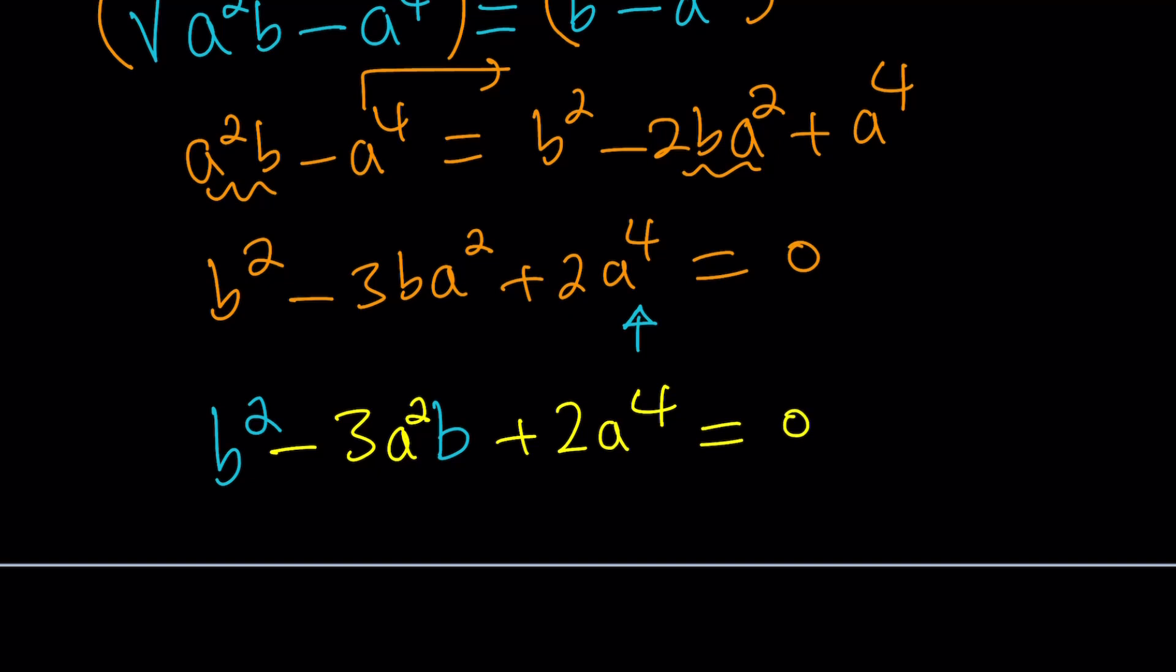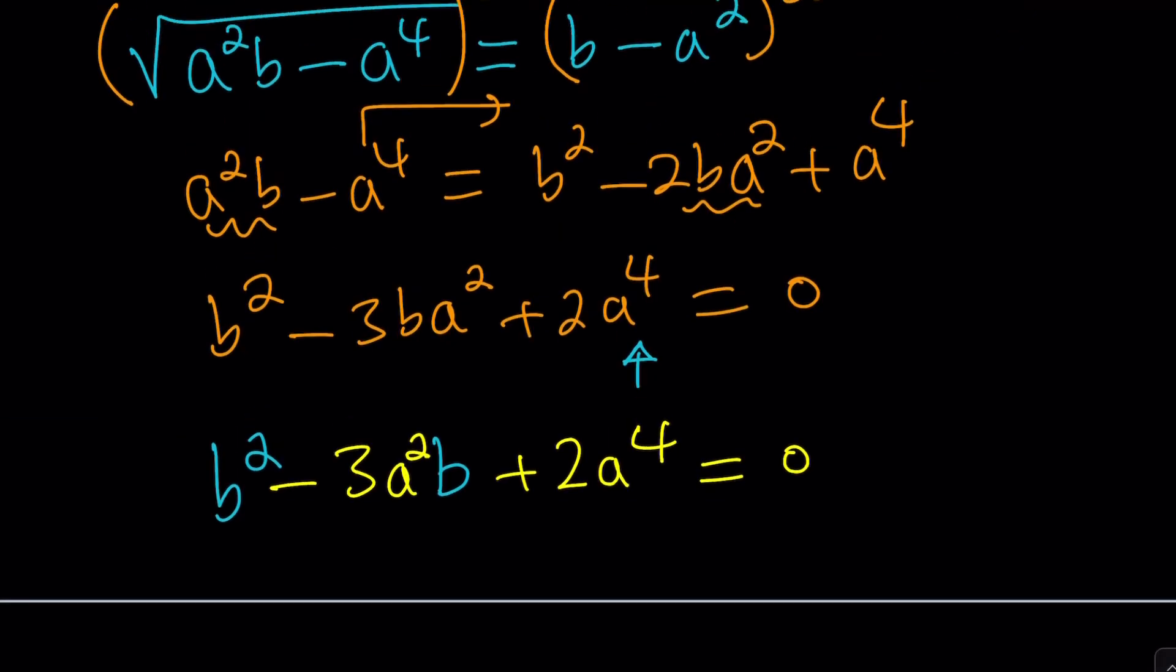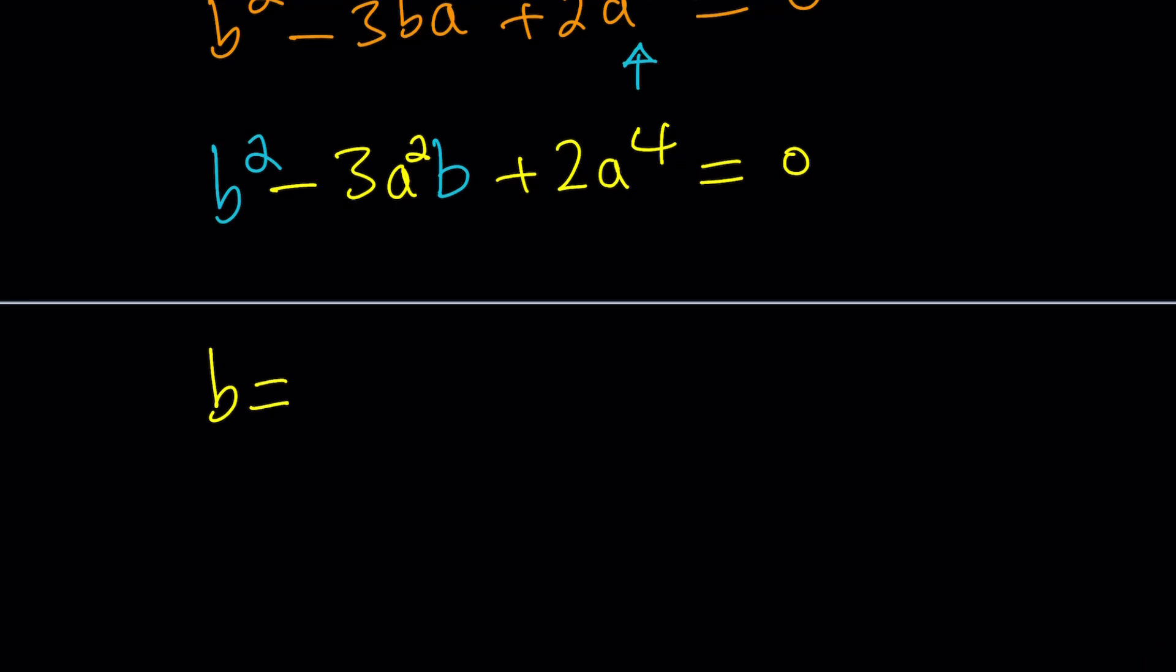So let's go ahead and use the quadratic formula. From here I get b values, obviously. Negative b, it's kind of funny, but the coefficient of b is b in this case. The opposite of that. In other words, what's the opposite of this coefficient right here, which is 3a squared. Plus minus the square root of that coefficient squared, which is 9a to the 4th. Minus 4ac. Remember that. 4 times 2a to the 4th. So this is kind of like a safer method to do it, but I'm also going to show you an alternative which works well in this case too. Anyways, that's going to be divided by 2.